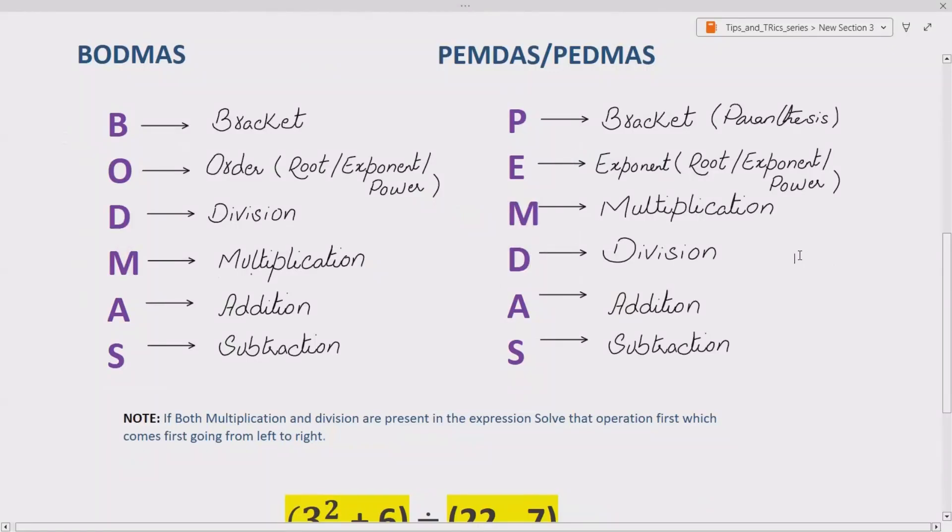Actually, division and multiplication have the same level of preference. What does this mean? If both multiplication and division are present in your expression, solve the operation first which comes from going left to right first.